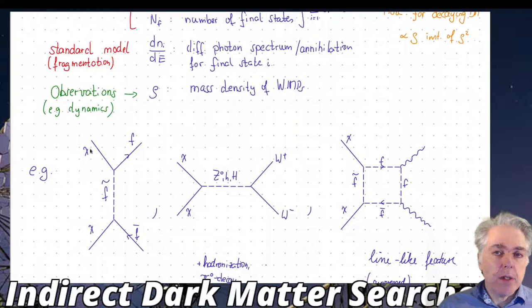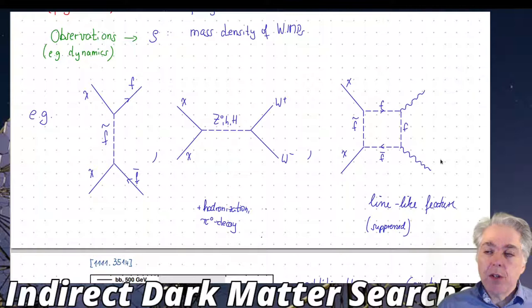The annihilation can proceed, that's model dependent again similar to the direct detection channel. Generically speaking you could have neutralino neutralino with a sfermion exchange producing a fermion antifermion final state, or a coupling producing W+ W- in the final state.